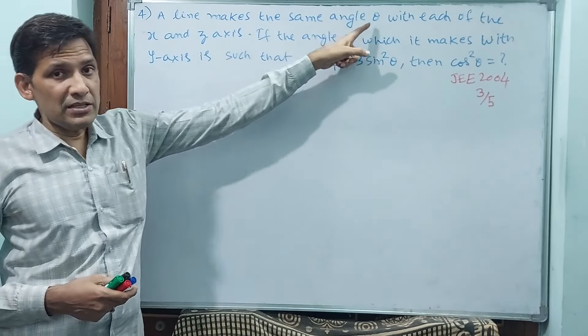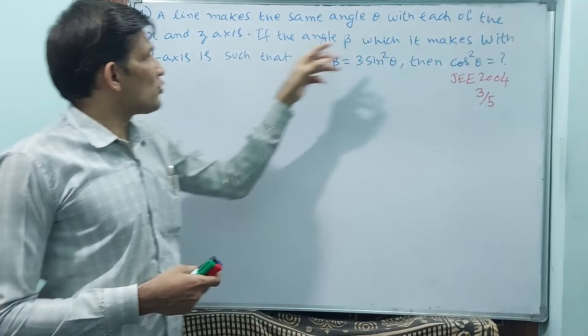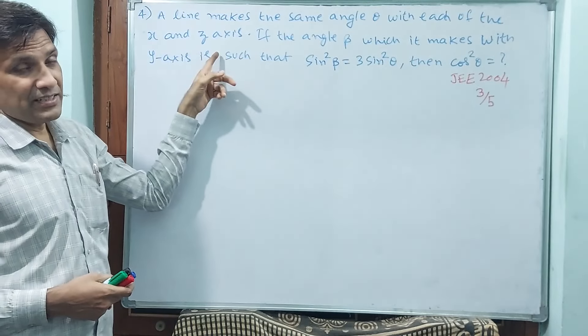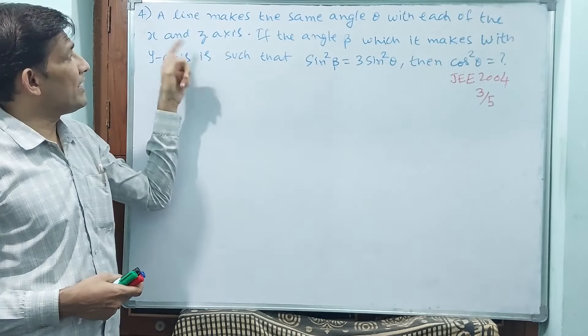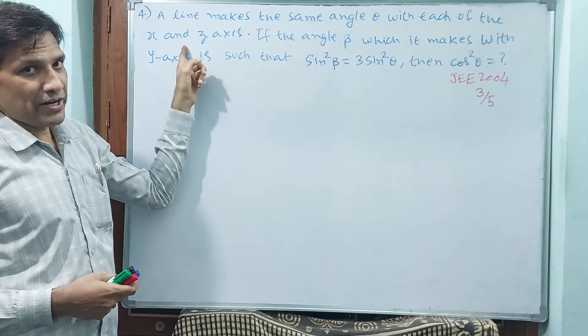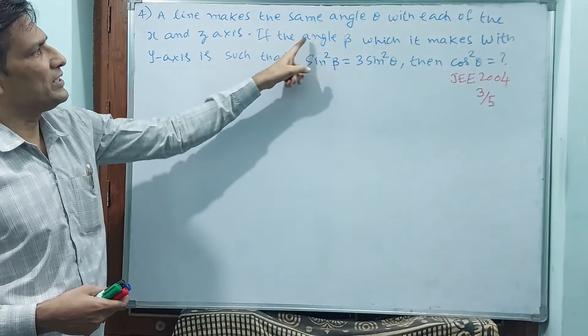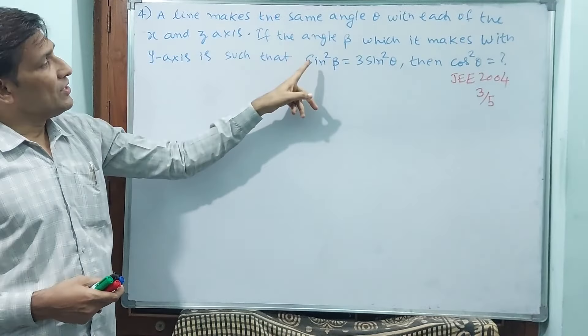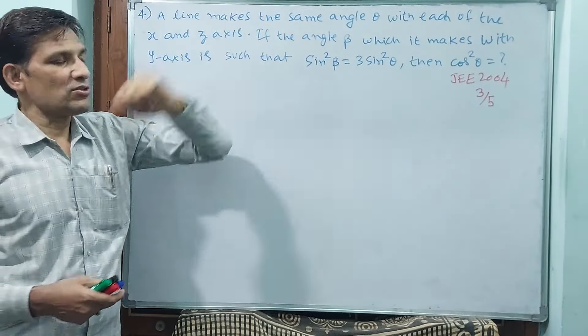A line makes the same angle theta with each of the x and z axis here. You see, x axis and z axis means alpha and gamma. Beta they have not given but beta they have given somewhere else. See, angle theta which it makes with y axis is such that sin square beta is equal to 3 sin square theta.